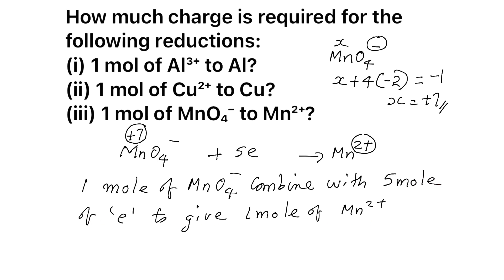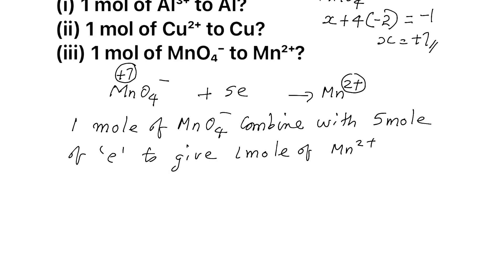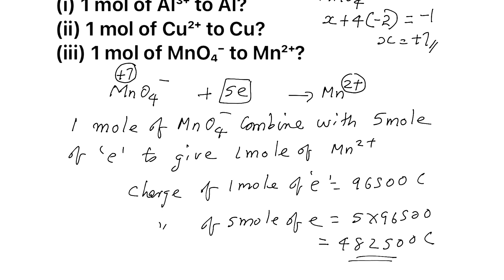You can read this equation like 1 mol of MnO₄⁻ combined with 5 mol of electron to give 1 mol of Mn²⁺. So what is the charge? We know charge of 1 mol of electron is 1 Faraday, which means 96500 Coulomb. Now how many moles we have? Charge of 5 mol of electron. We have 5 mol of electron, so what is that? 5 into 96500, and you will be getting 482500 Coulomb.